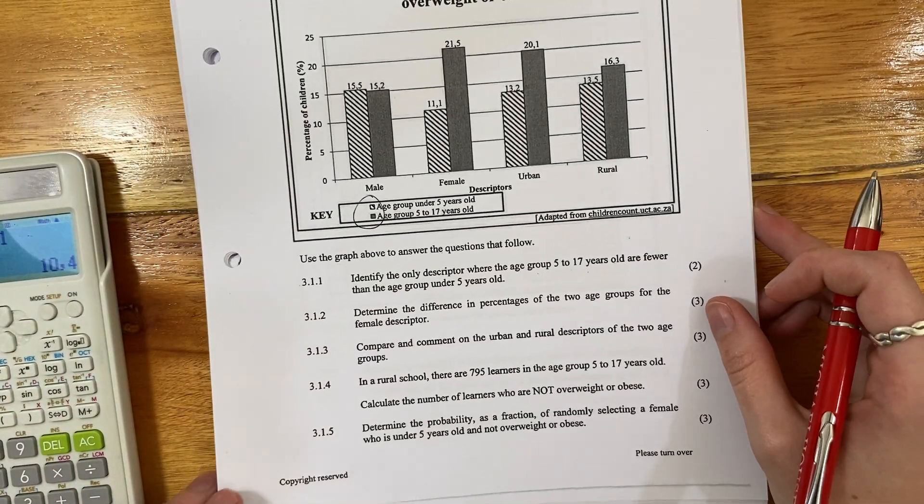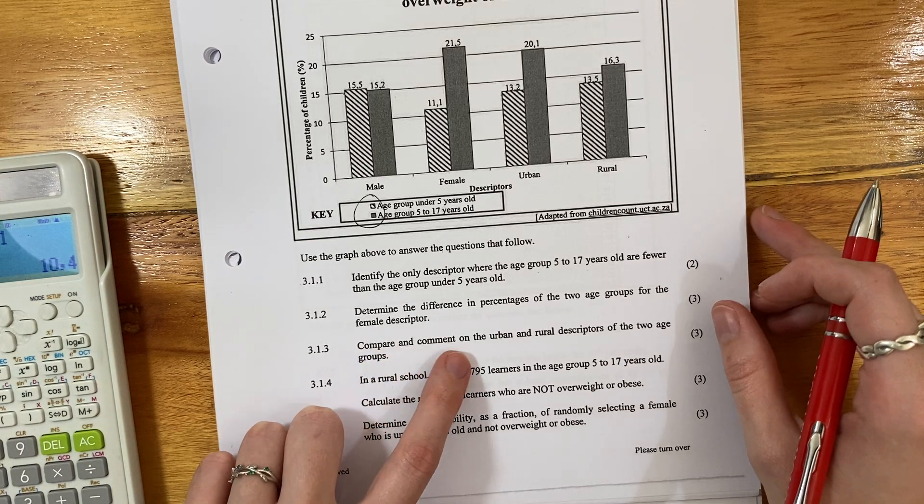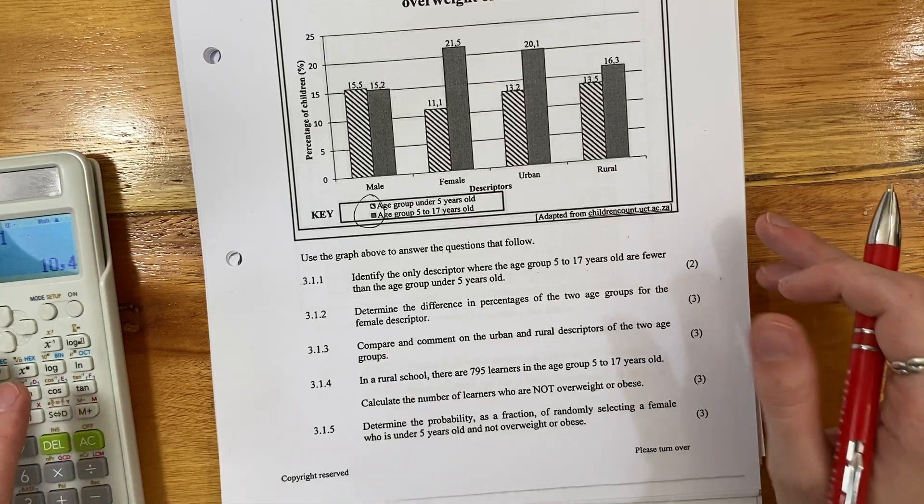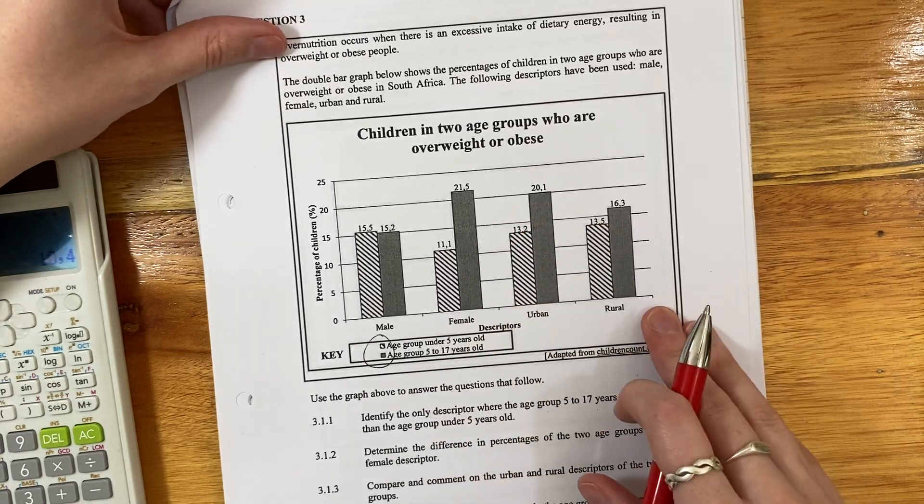3.1.3, compare and comment on the urban and rural descriptors of the two age groups. So basically it's saying give a little bit of a comparison between what's happening here.